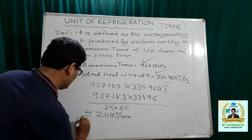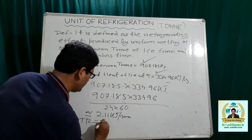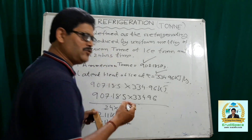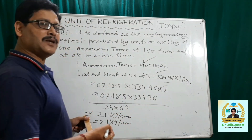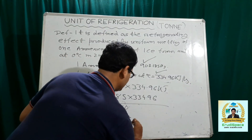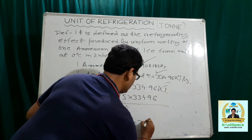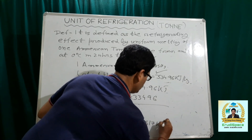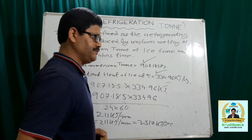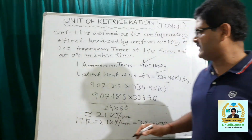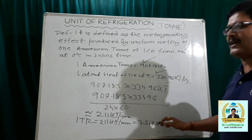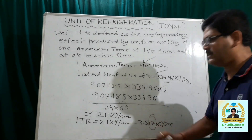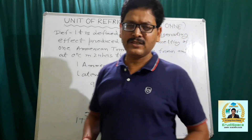So one TR is 211 kJ per minute. If you want to represent this in terms of kJ per second, it is 3.517 kJ per second. Some people take this as 3.5 kJ per second, not considering the small fraction.